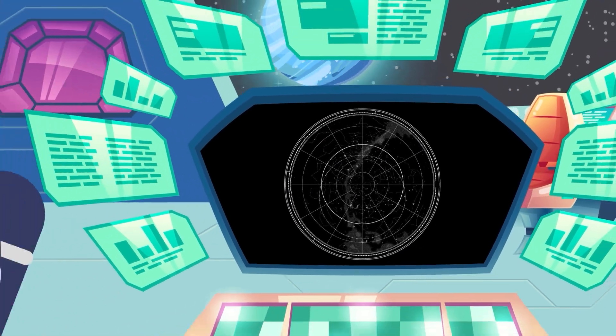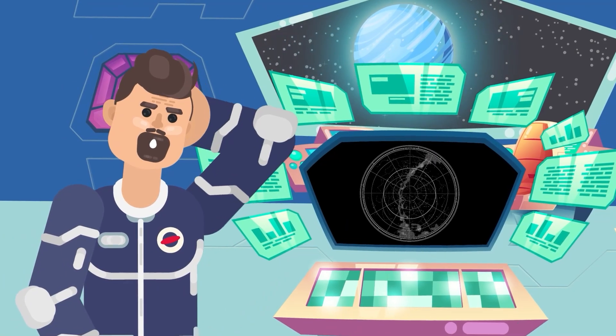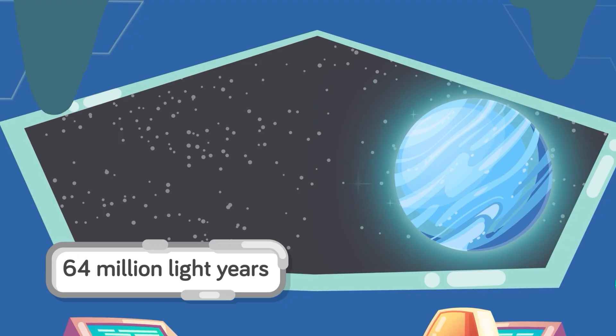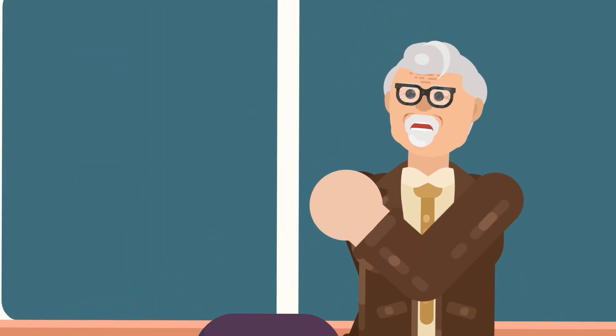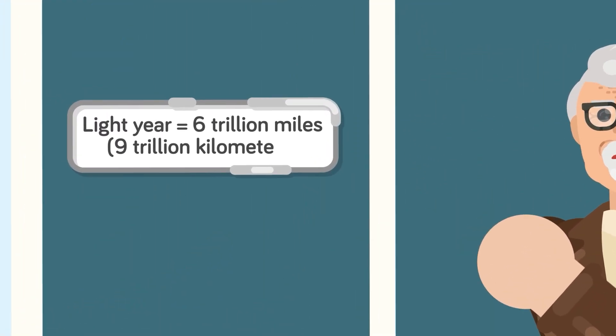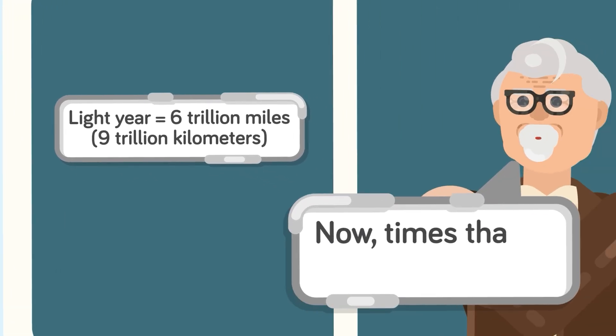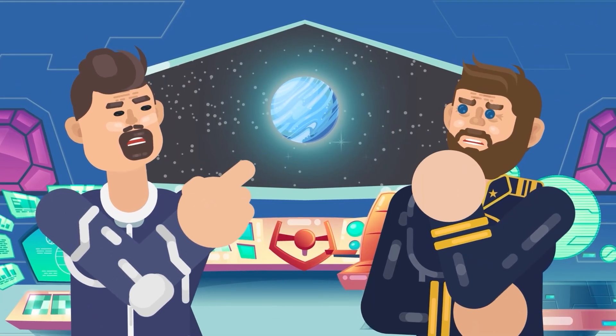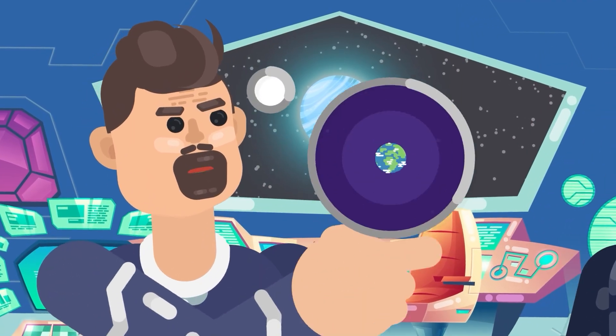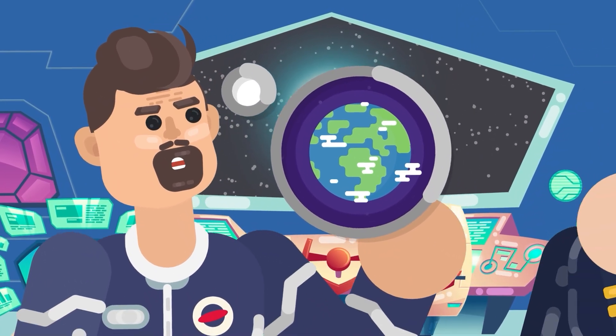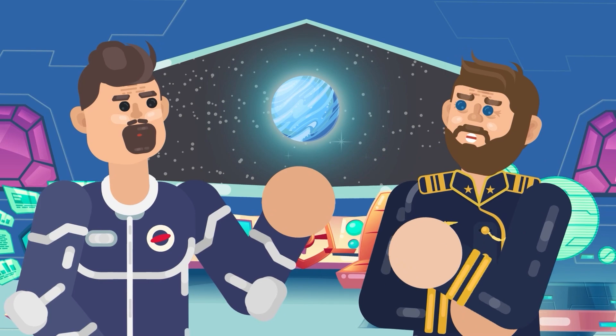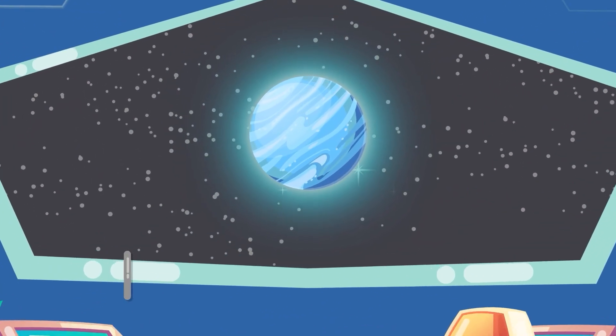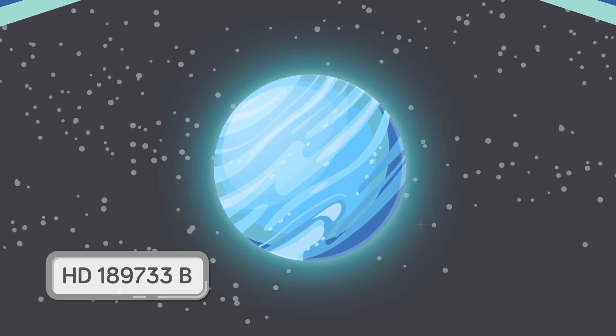Except the navigator checks the star map and quickly notices they're a long, long way from Earth. To be exact, 64 million light years away. For reference, a light year is the distance that light travels during one Earth year, which is about 6 trillion miles. Now times that by 64 million. The planet beyond the ship's viewpoint might look like Earth from the distance, since that blue hue feels so familiar. In actuality, it's another exoplanet, a planet that exists just outside our solar system, known as HD 189733 b.